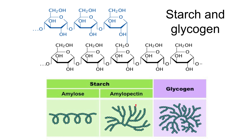The same is true for glycogen in animals. If there is excess glucose, the first thing an animal does is store it as glycogen. You can store a lot in a small space, break it down easily, and it doesn't affect the osmotic balance of the cell. So there are many reasons to store monosaccharides as polysaccharides.